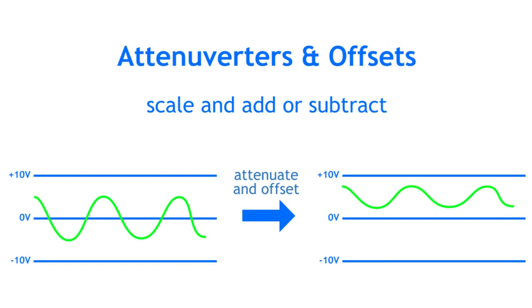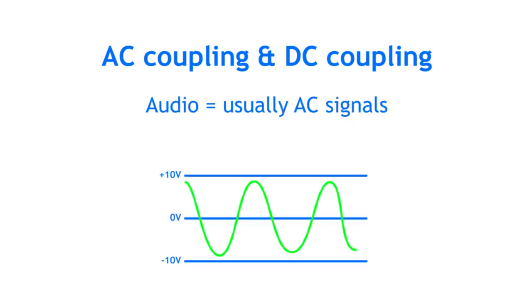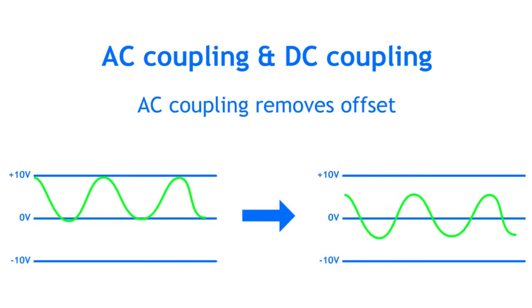At this point I should briefly mention AC coupling and DC coupling. Modules that mainly process audio signals, which are signals alternating between positive and negative voltages, often use AC coupled circuits, which means that any constant current is removed to keep the center of the waveform at 0 volts.